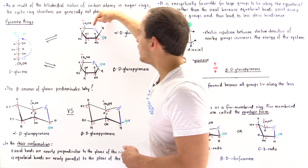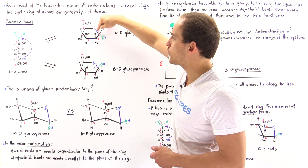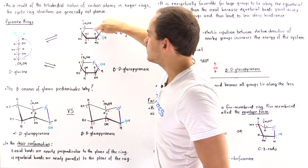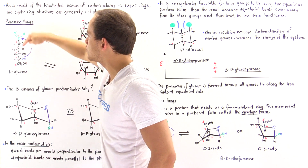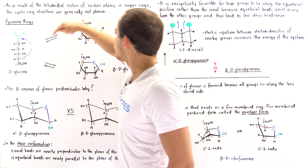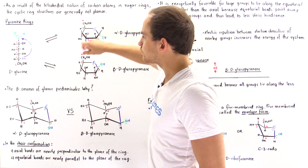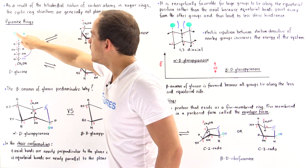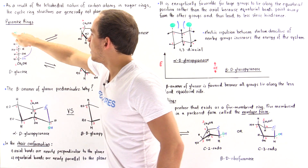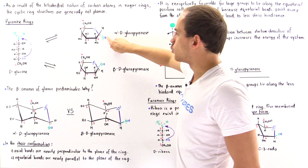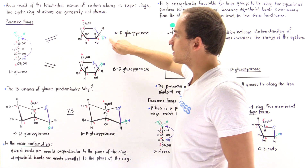We form a bond between this oxygen and this carbon. This bond is shown in purple in this diagram — the bond formed between the blue oxygen and the green carbon. This oxygen basically becomes a hydroxyl group shown here.